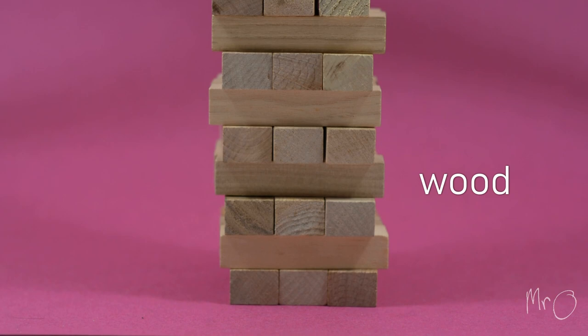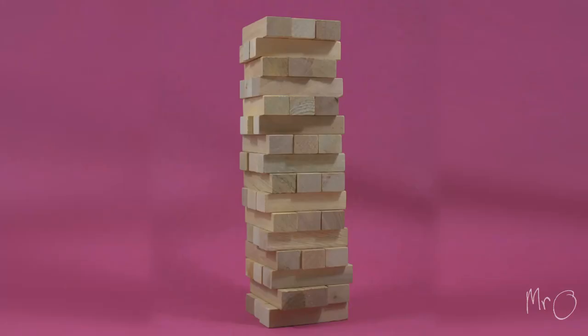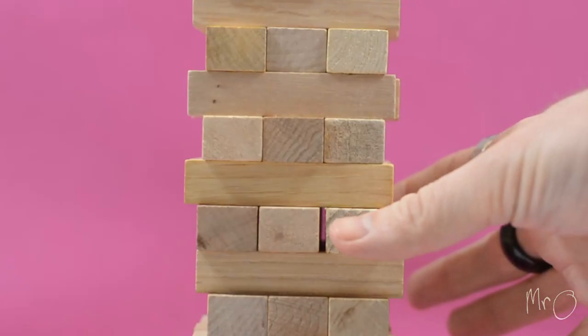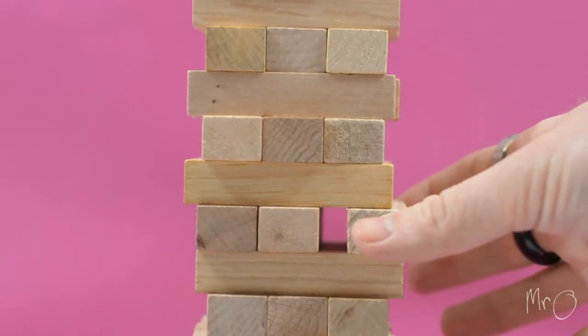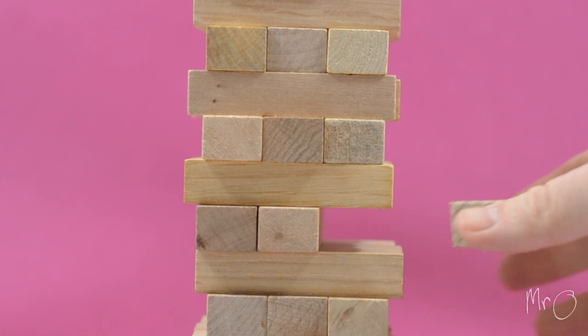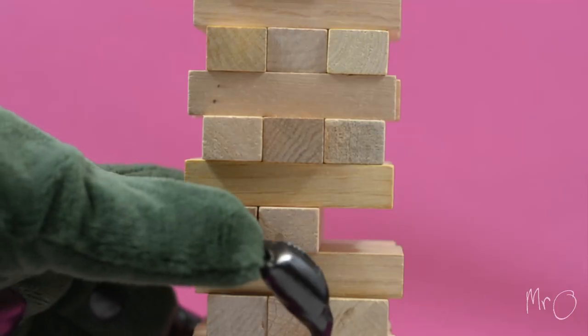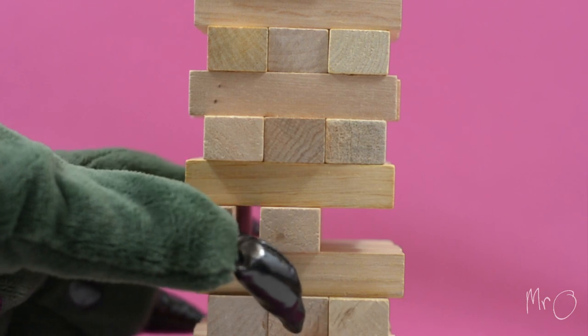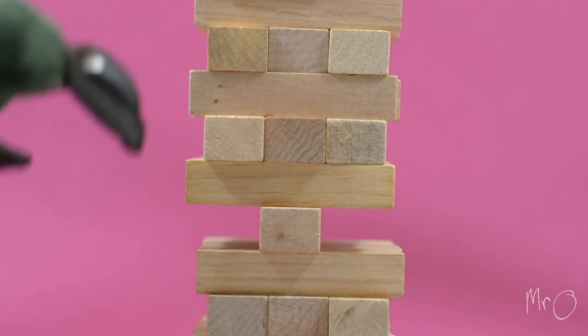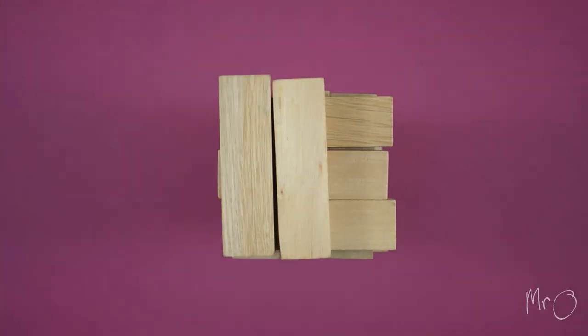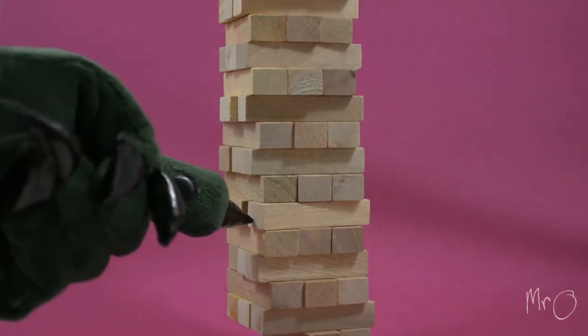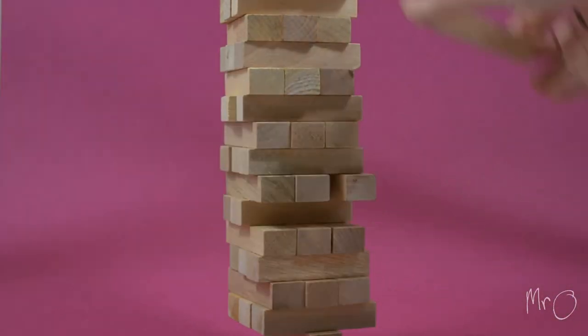The blocks are made of wood. The wood blocks are in a tower. Take a block from the tower and place it on the top. If the tower falls down, you lose.